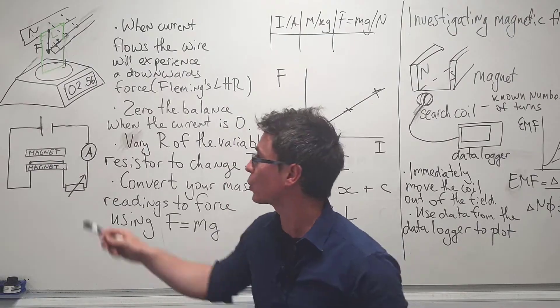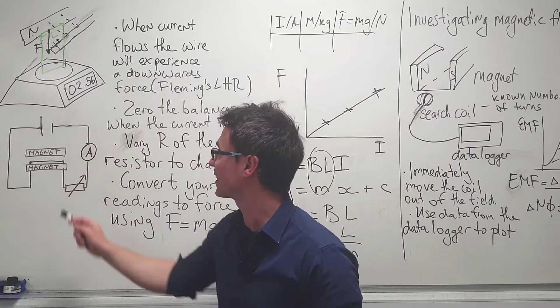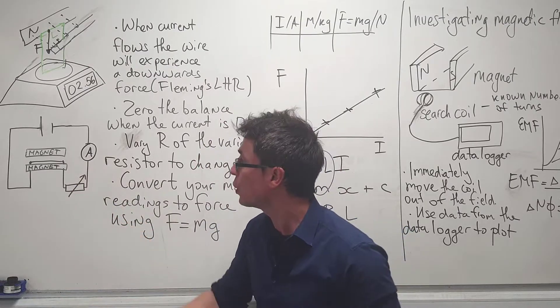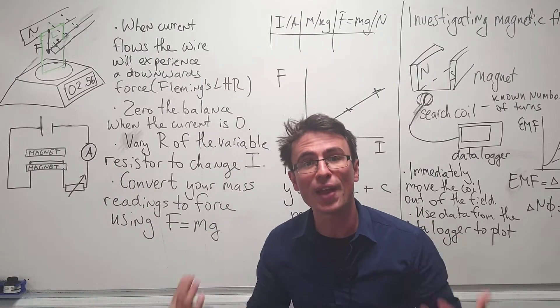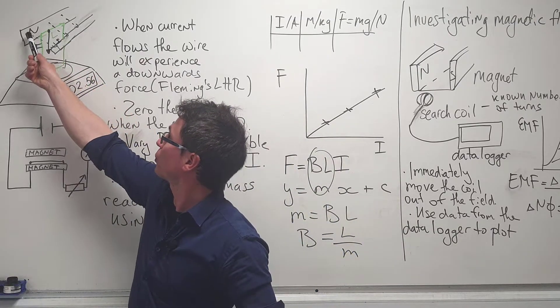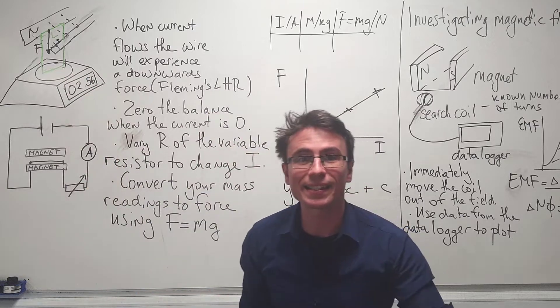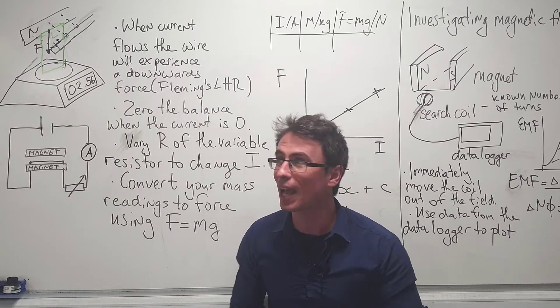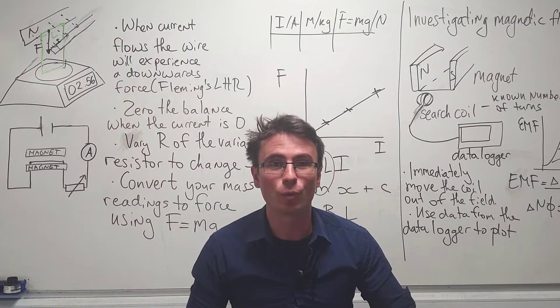We also have a magnet over here just beside the wire. We have connected the wire to a DC power supply, which is a little cell over here, and we also have a variable resistor so that we'll be able to vary the current. The wire is at right angles to the magnetic field, which is going from north to south, and will experience a force due to Fleming's left-hand rule which will be going downwards.